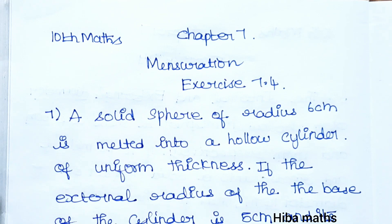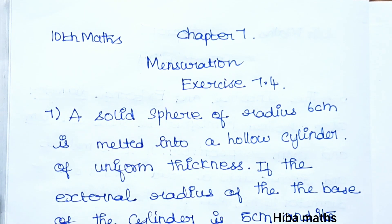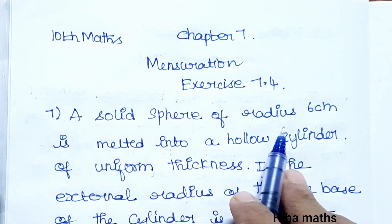Hello students, welcome to Hiba Maths, 10th standard maths chapter 7 mensuration exercise 7.4, question 7. A solid sphere of radius 6 centimeters is melted into a hollow cylinder of uniform thickness.